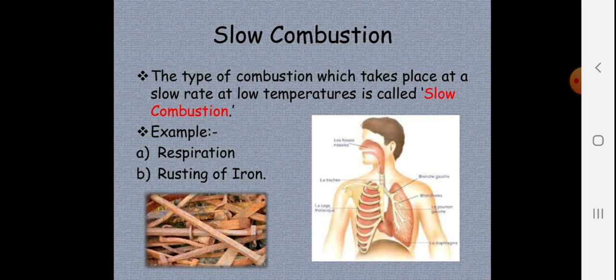Slow combustion is the type of combustion which takes place at a slow rate and at low temperature. For example, respiration — yes, you heard correctly, slow combustion is taking place in all of our bodies, and that is respiration. Another example is rusting of iron. Both of these are types of slow combustion.